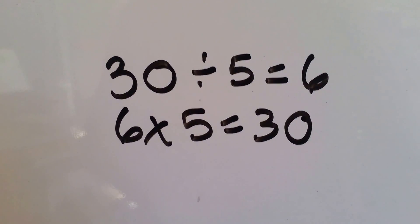30 divided by 5 equals 6, and 6 times 5 equals 30.